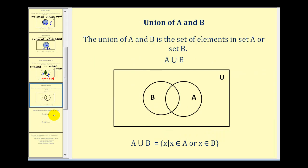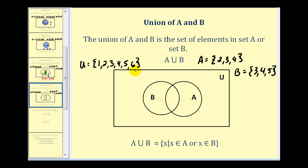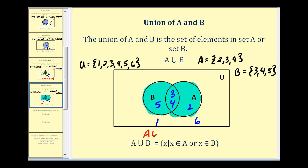And now let's talk about the union of sets. The union of A and B is the set of all elements in set A or set B. So A union B is equal to all elements x such that x is contained within A or x is contained within B. The big difference between intersection and union is intersection uses 'and', union uses 'or'. Using the same sets as the intersection example, the union would be all the elements that are in A or B — this entire region. So A union B would be all elements in the universal set except one and six, giving us two, three, four, and five.